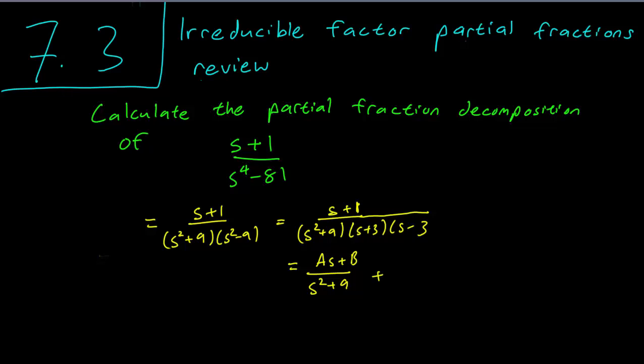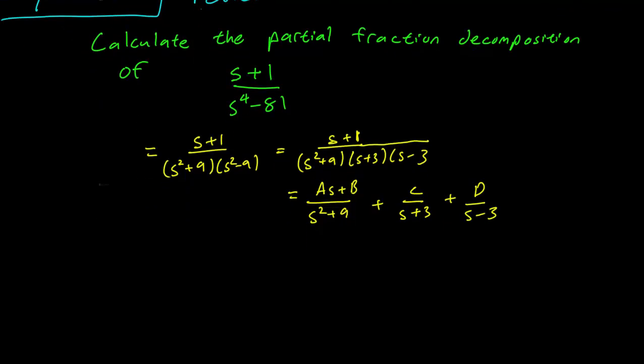Plus C over s plus 3, so this will be normal, plus D over s minus 3. This is our partial fraction decomposition and we need to calculate A, B, C and D.